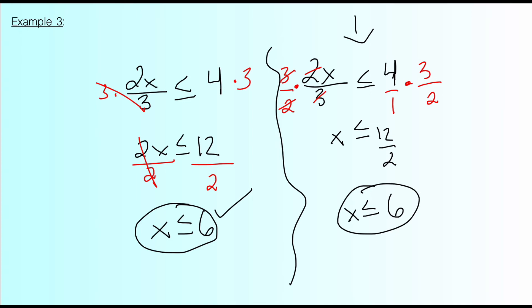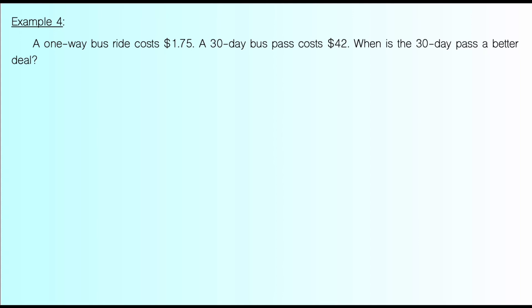And our last example, we're going to be looking at a word problem similar to the way that we ended yesterday's lesson. So this word problem reads, a one-way bus ride costs $1.75. A 30-day bus pass, on the other hand, costs $42. So the ultimate question is, at what point will it be a better deal to purchase a 30-day pass?